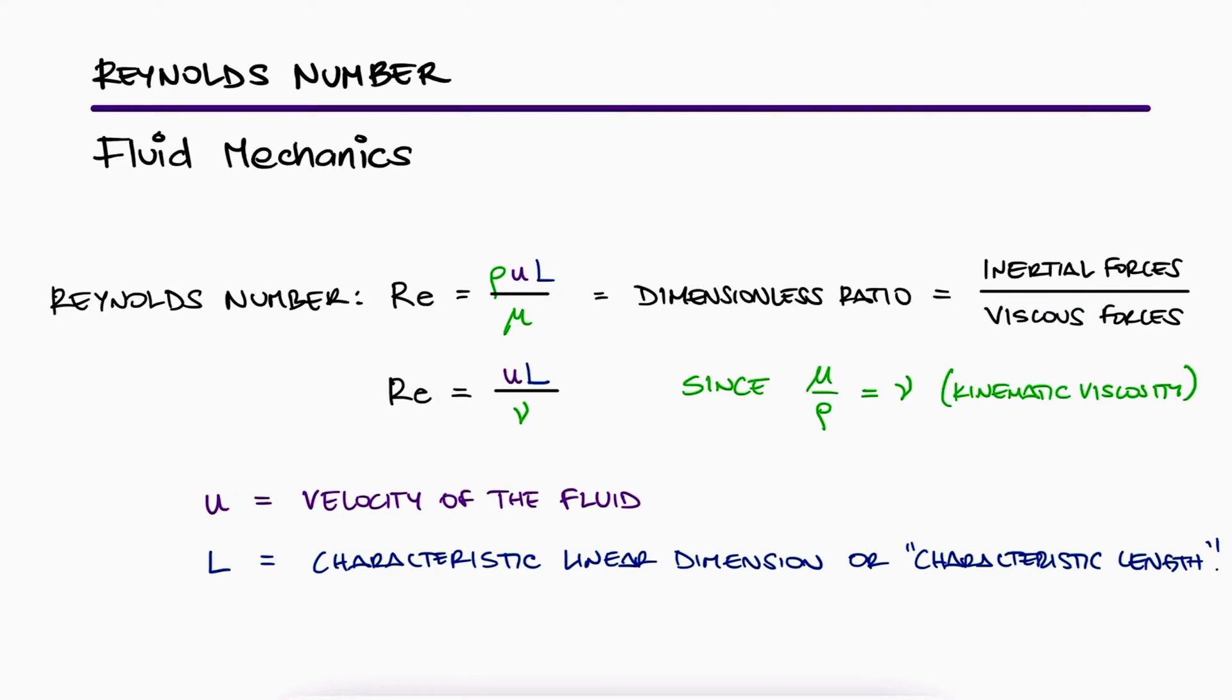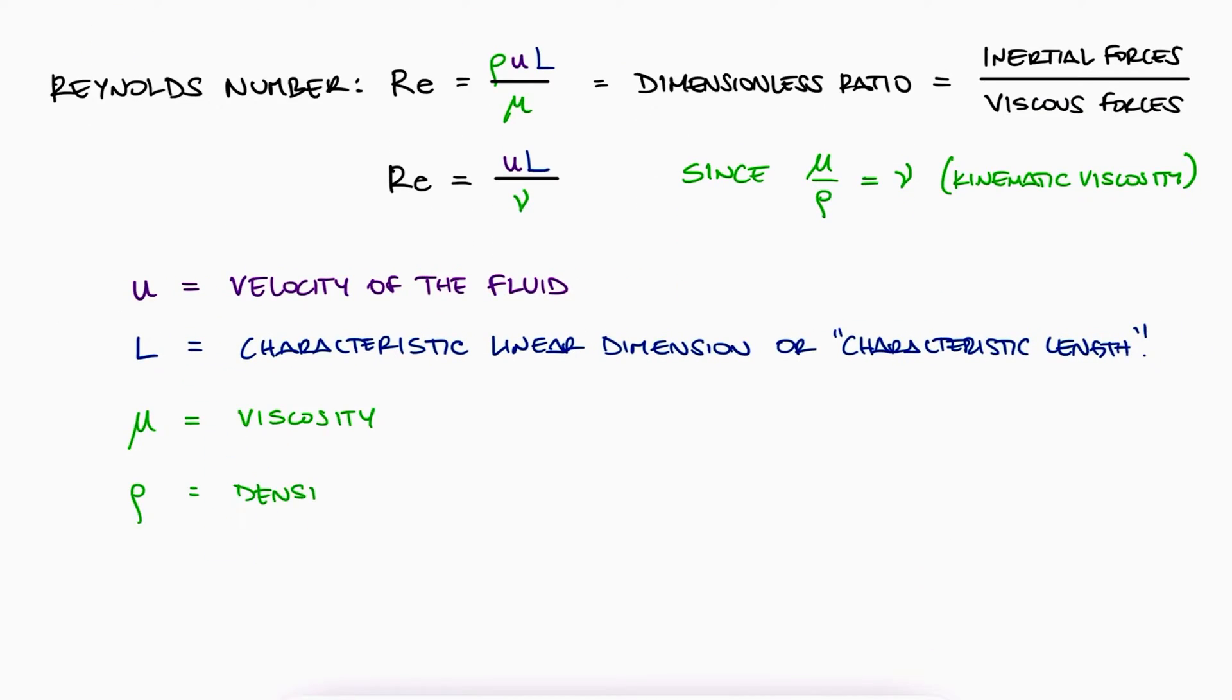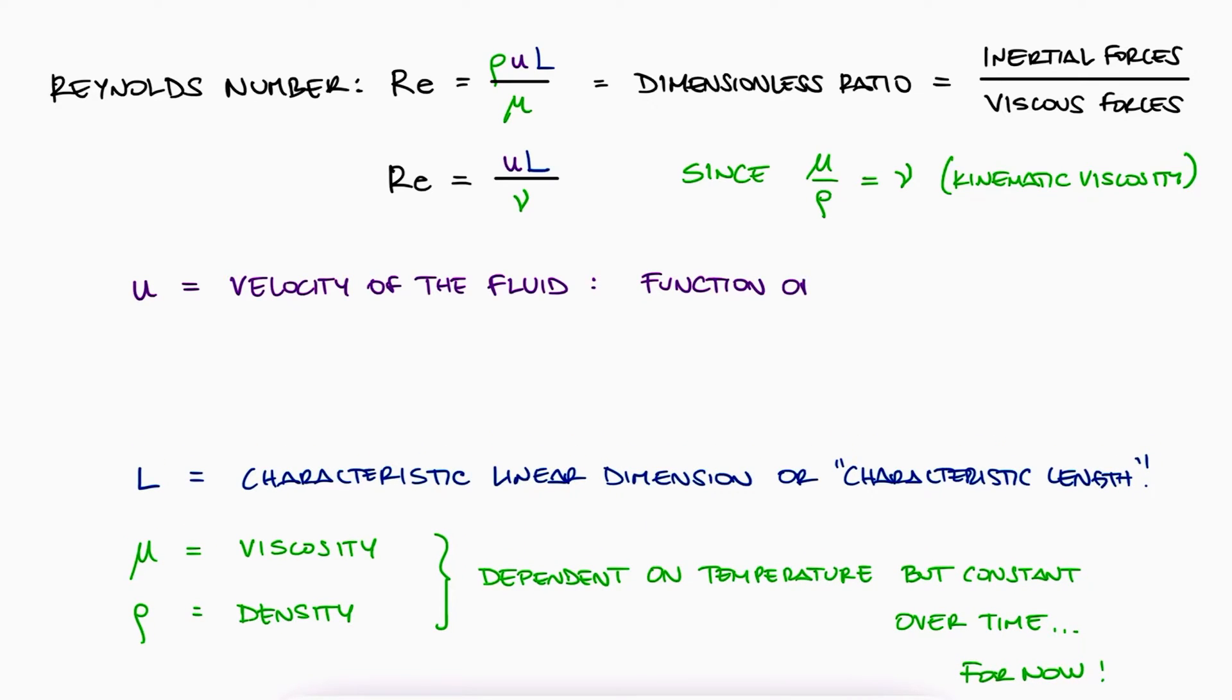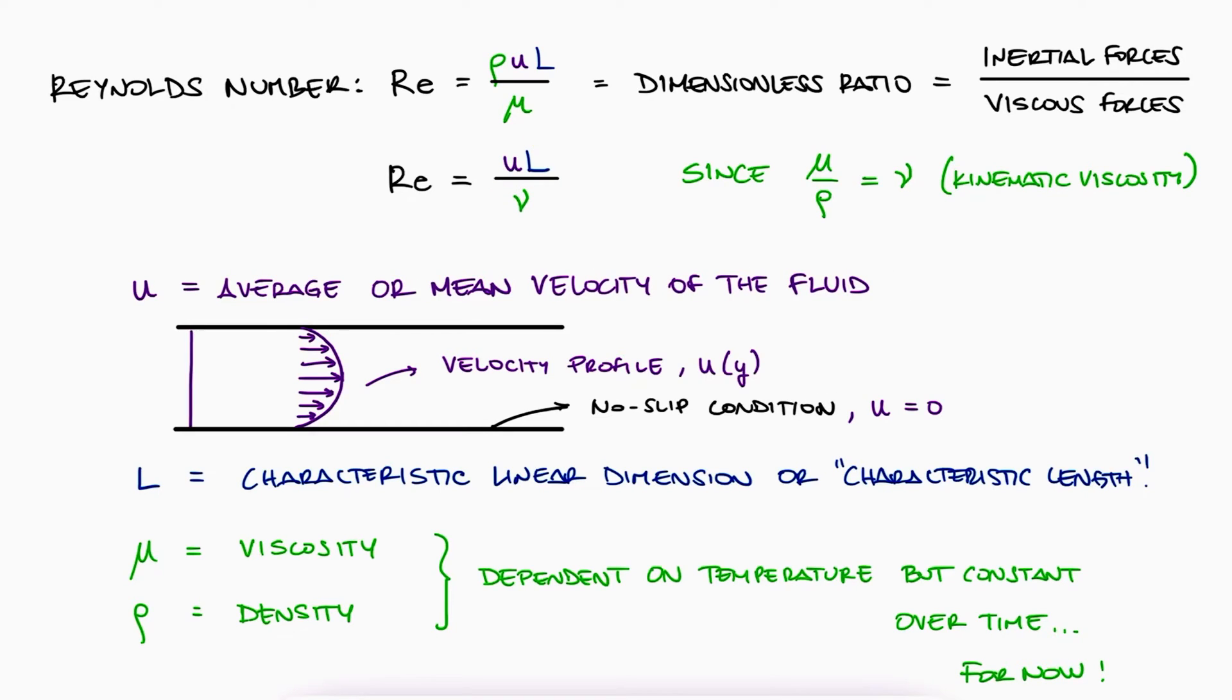The viscosity and density of the fluid are properties that are assumed constant in initial Reynolds number applications. The velocity of the fluid is usually not the same at different locations. Inside a pipe, for example, due to the no-slip condition, the velocity is zero next to the inner surface and increases as we move away from the walls. Therefore, the velocity term in the Reynolds number expression refers to the average or mean velocity.